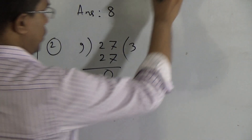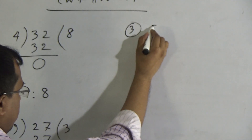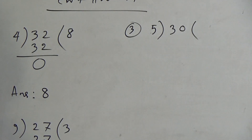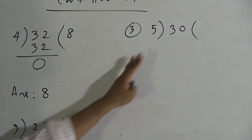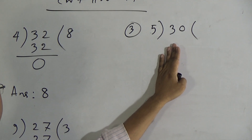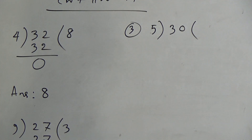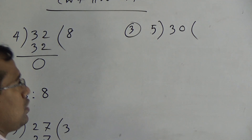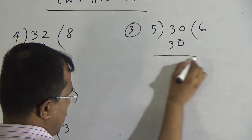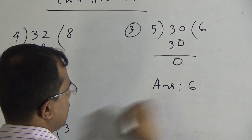Now we will do number 3: we will divide 30 by 5. Now times tables of 5: 5 zeros are 0, 5 ones are 5, 5 twos are 10, 5 threes are 15, 5 fours are 20, 5 fives are 25, and 5 sixes are 30. If we give 6 times, then we will get 30. Now 30 minus 30 equals 0, so the answer is 6.